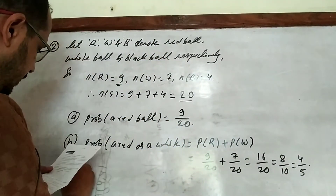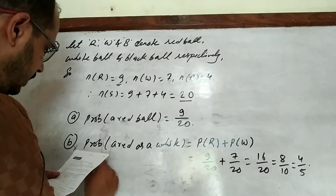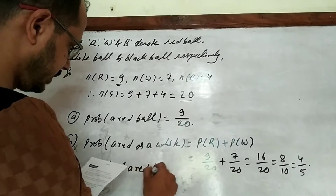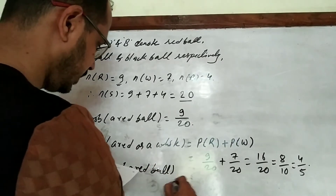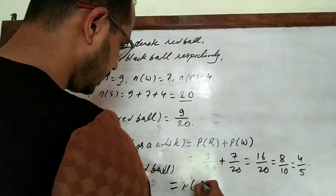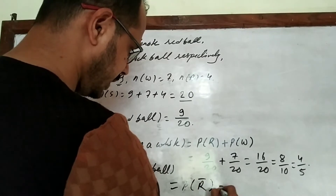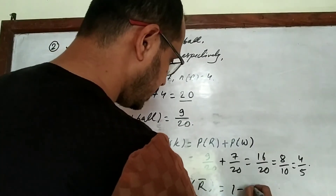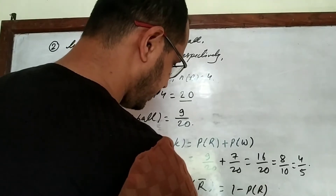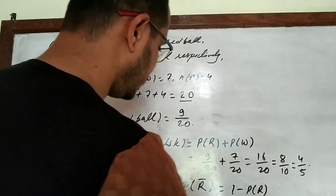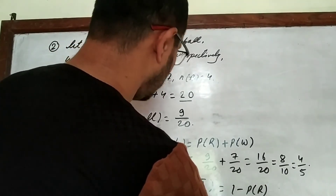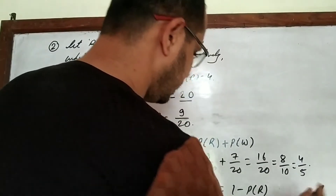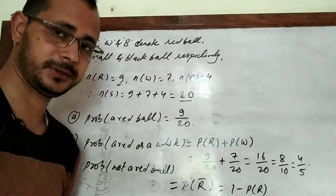Part (c): probability of not getting a red ball. Using the complement rule: P(not R) = 1 − P(R) = 1 − 9/20 = 11/20. That is our answer for question number two.